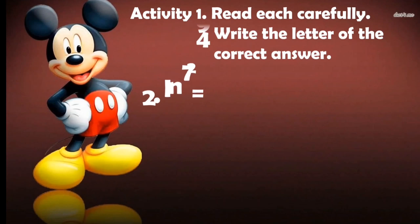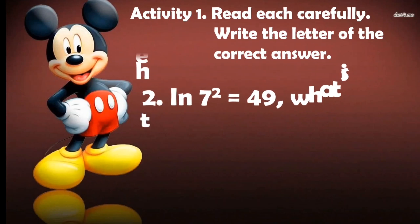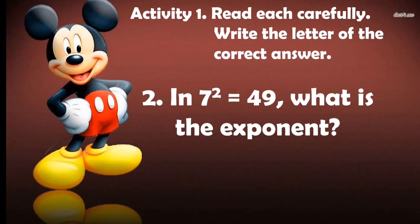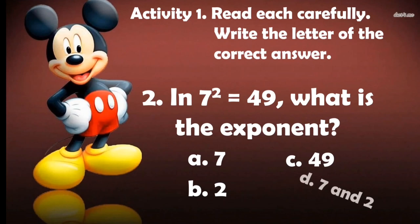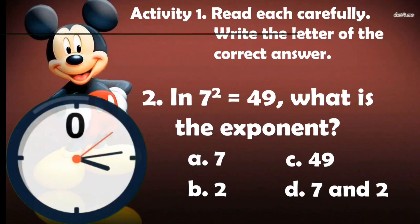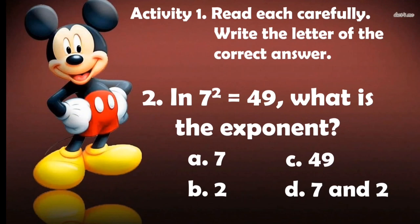Next, number 2. In 7 squared equals 49, what is the exponent? A. 7, B. 2, C. 49, D. 7 and 2. If your answer is 2, you got the correct answer.